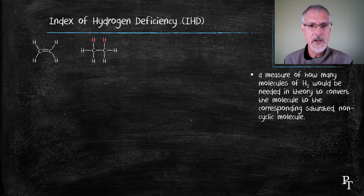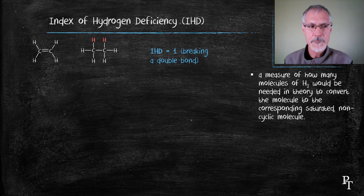So if I begin with the molecule ethene and I convert it to the molecule ethane, I'm going to require two hydrogens or one hydrogen molecule, hence its IHD would be one.